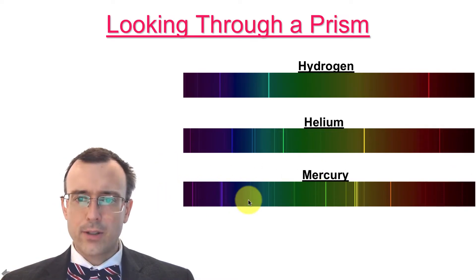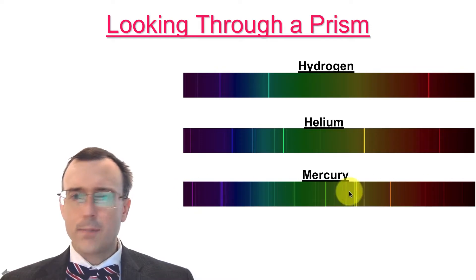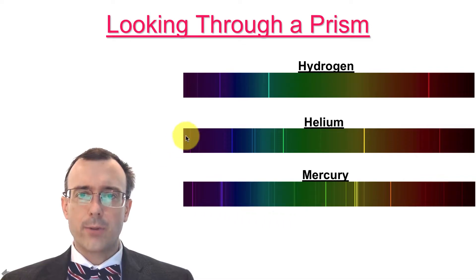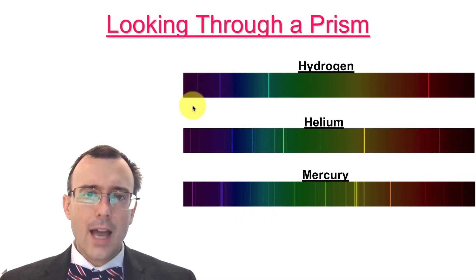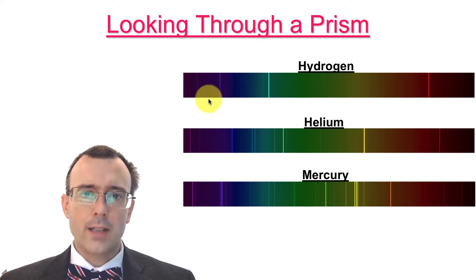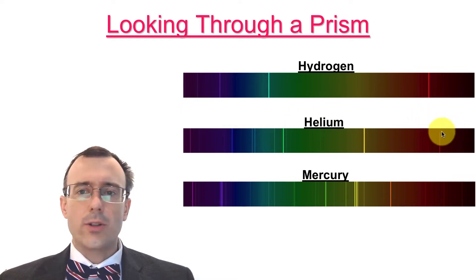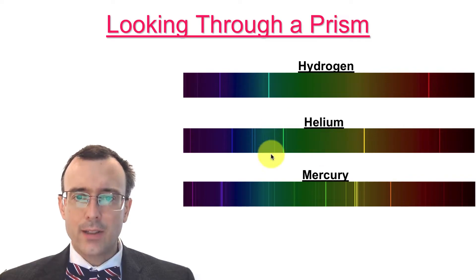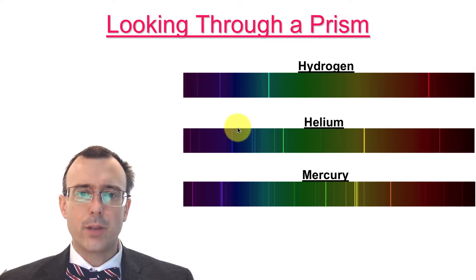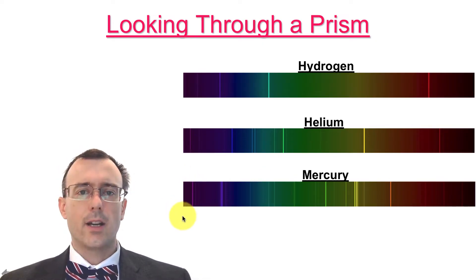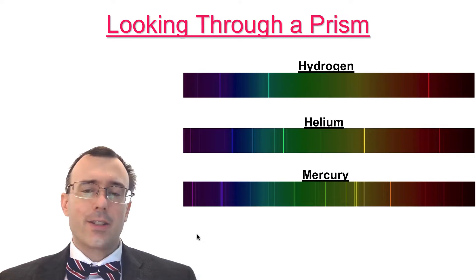These lines are different colors of light. For example, hydrogen has a red line, a teal line, a purple line, and another purple line. Helium has a red line, a yellow line, and various fine lines including green, blue, and purple lines. Mercury has tons of lines in it. So looking through a prism actually made things a little more complex rather than answering the question.